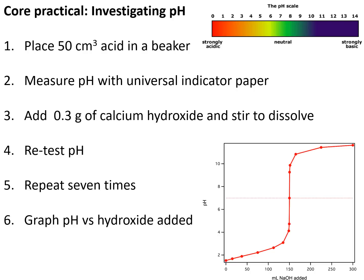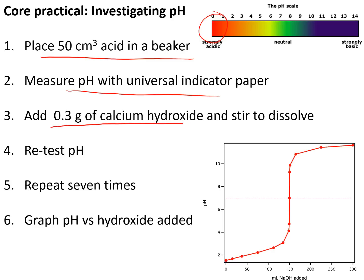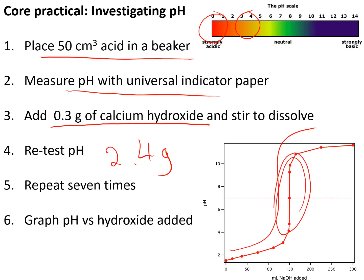The second core practical investigated how pH changes as you add a base to an acid. We put 50 cm³ of hydrochloric acid in a beaker and measured pH using universal indicator paper — it came out at around pH 0 or 1. Then we added 0.3 grams of calcium hydroxide, stirred to dissolve, and retested the pH. We repeated this seven times to add a total of 2.4 grams of calcium hydroxide, then produced a graph of pH versus amount of base added. The graph starts flat, has a very steep section in the middle around the neutralisation point, then flattens off again at the end.